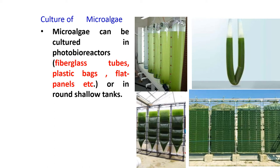The closed system prevents evaporation and reduces water use and lower carbon dioxide losses due to outgassing, and permits higher cell concentration, thus reducing the operation costs and attaining higher productivity. Examples include Dunaliella bardawil and Rodella reticulata.